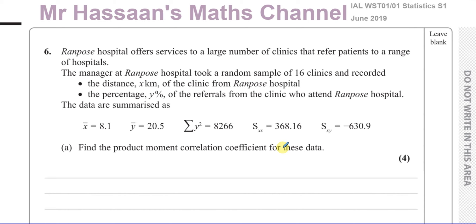The question says: Rampo's Hospital offers services to a large number of clinics that refer patients to a range of hospitals. So there are some clinics that refer patients to hospitals if the clinics can't deal with their issues. The manager at Rampo's Hospital took a random sample of 16 clinics and recorded two things: the distance in x kilometers of the clinic from Rampo's Hospital, and the percentage y percent of the referrals from the clinic who attend Rampo's Hospital.